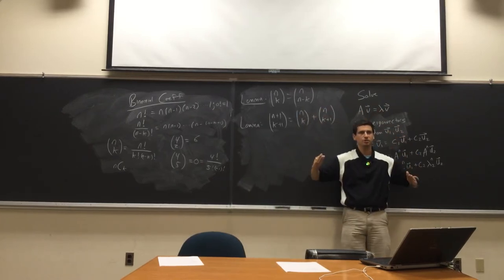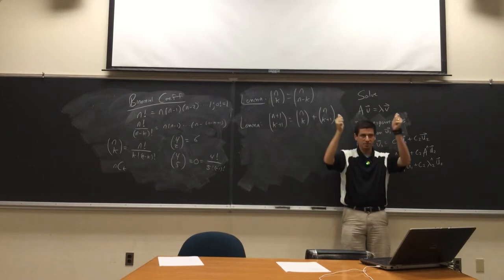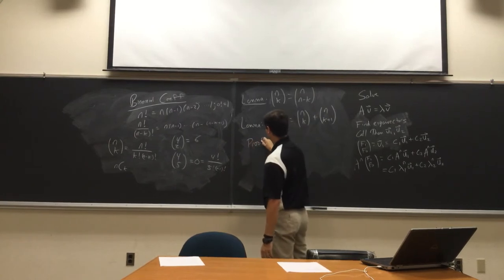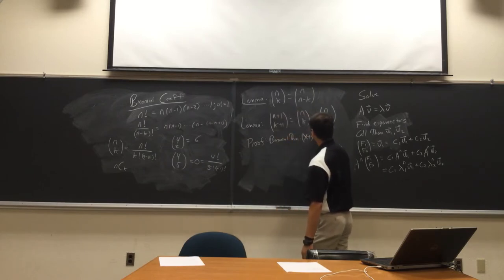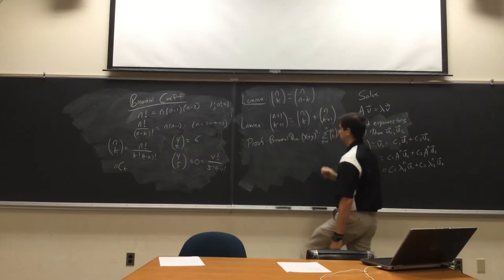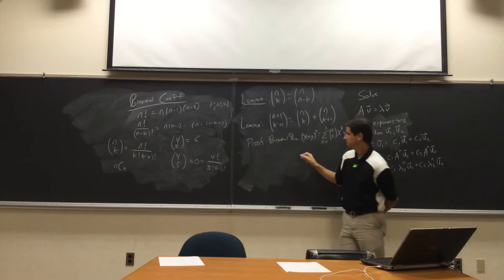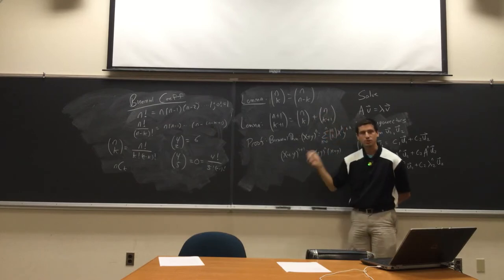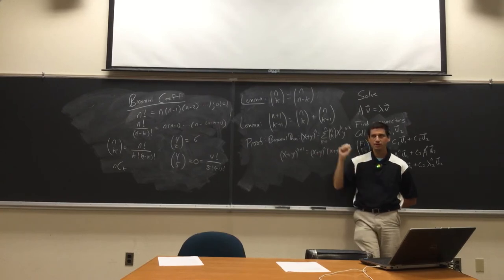One way to get Pascal's relation is via the binomial theorem: (x + y)^n = Σ_{k=0}^{n} C(n,k) · x^k · y^(n−k). Then (x+y)^(n+1) = (x+y)^n · (x+y), expand and match coefficients. I'll leave that algebraic proof to you. But there's also a story proof.